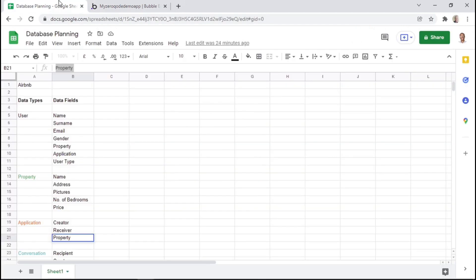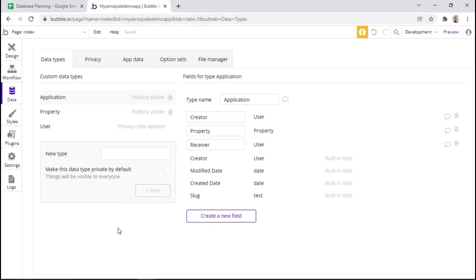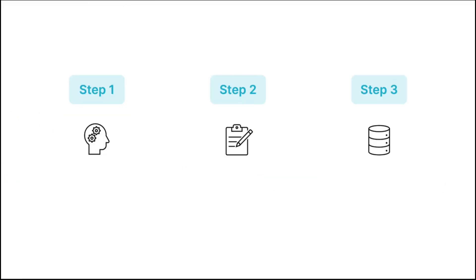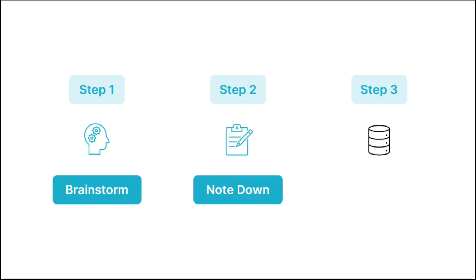So this was basically an example of how to plan out your database and then create it within the Bubble application. We've also seen how to use option sets when creating your database. Finally, here are some suggested steps when creating a database for your application. Step one is to brainstorm — think about the specific data types and data fields that are specific to your application. The next step is to note down the specified requirements — after brainstorming, you note them down, which is the same thing we did with Google Sheets. After that, the next step is to implement — actually creating the specific data types and data fields within your Bubble application and also linking the option sets and data fields or data types together.